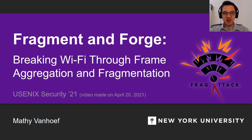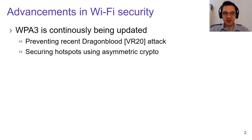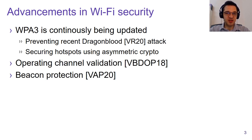Let me first give a quick background on Wi-Fi security, and in particular, if we look at the last recent years, we can see that some major advancements have been made. For instance, WPA3 got updated to prevent the Dragonblood attacks, and it now contains a feature to secure hotspots using asymmetric crypto. Additionally, some extra defenses, such as channel validation and beacon protection, have also been standardized.